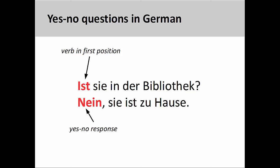In the sentence you see on the screen, is she in the bibliothek? Is she in the library? There is subject-verb agreement between the ist, third-person singular form of sein, and the subject sie, third-person singular feminine personal pronoun.